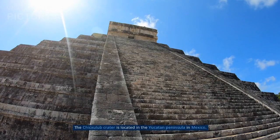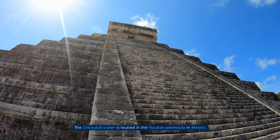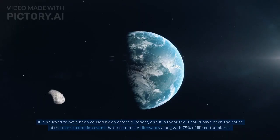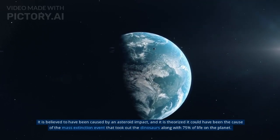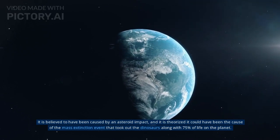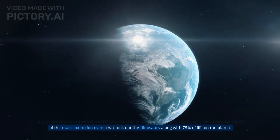Number 1: Chicxulub. The Chicxulub crater is located in the Yucatan Peninsula in Mexico. It is believed to have been caused by an asteroid impact, and it is theorized it could have been the cause of the mass extinction event that took out the dinosaurs along with 75% of life on the planet.